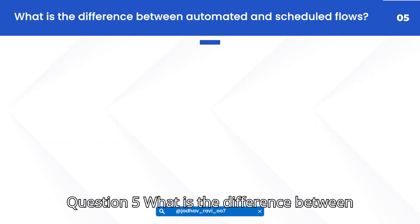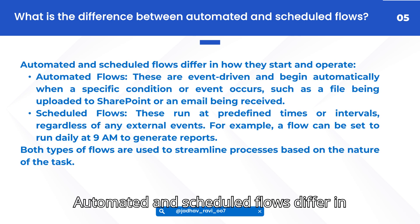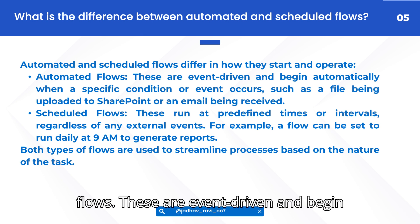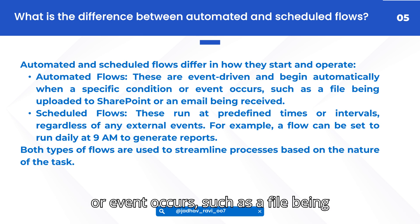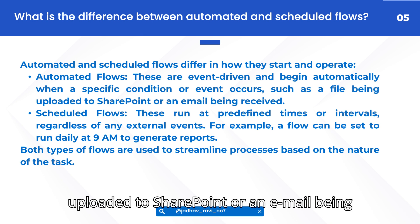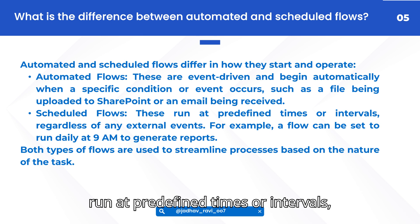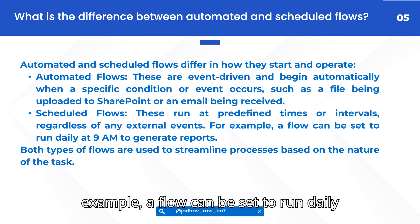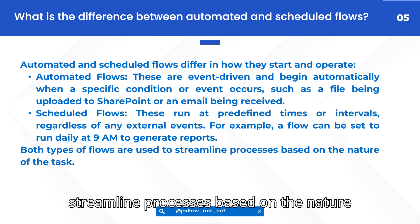Question 5: What is the difference between automated and scheduled flows? Answer: Automated and scheduled flows differ in how they start and operate. Automated flows are event-driven and begin automatically when a specific condition or event occurs, such as a file being uploaded to SharePoint or an email being received. Scheduled flows run at pre-defined times or intervals, regardless of any external events. For example, a flow can be set to run daily at 9 a.m. to generate reports. Both types of flows are used to streamline processes based on the nature of the task.